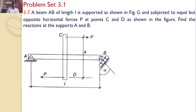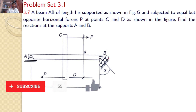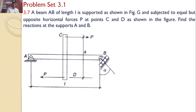There is a beam AB. At A, there is a hinged support, and at B there is a roller support, but the roller support makes an angle alpha with the vertical. The beam carries a member subjected to forces P and P, and the distance between these two forces is equal to e. Our interest is to find the reactions at A and B.